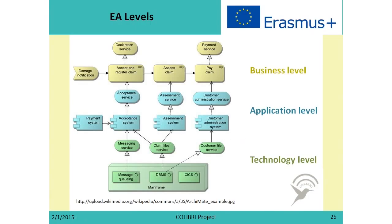There is also the application level, which could correspond to the application-level perspective, and the technology level. The application level is sometimes called the information systems level, though some people prefer application level. Information systems may cross all these levels, so more correct would be to say application level.